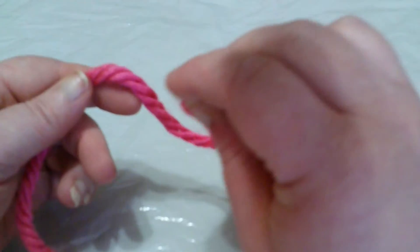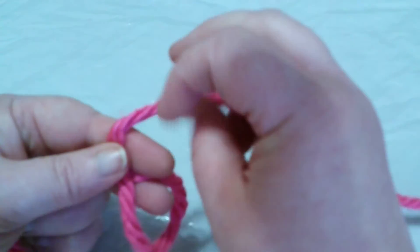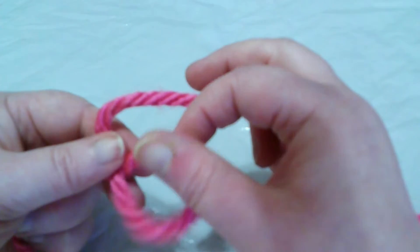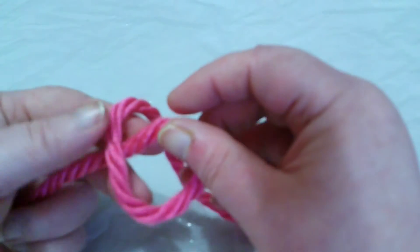You're going to take your right hand, put the yarn on top of the strand in your left hand where you're going to have a loop like this.